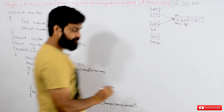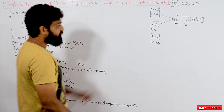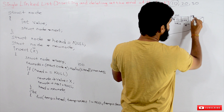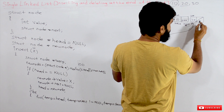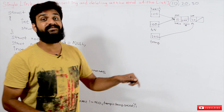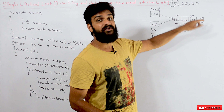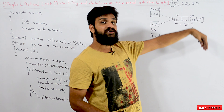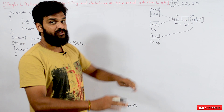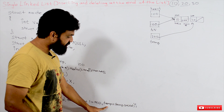Traversal is done using a for loop with a temp pointer: for(temp = head; temp->next != null; temp = temp->next). This loop iterates through the list, moving temp forward until temp->next is null, identifying the last node.